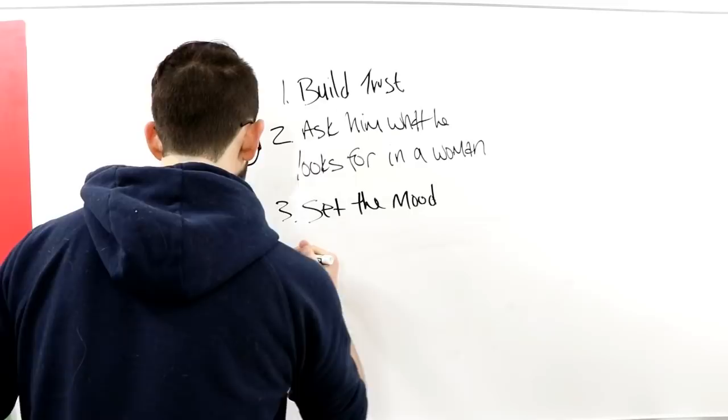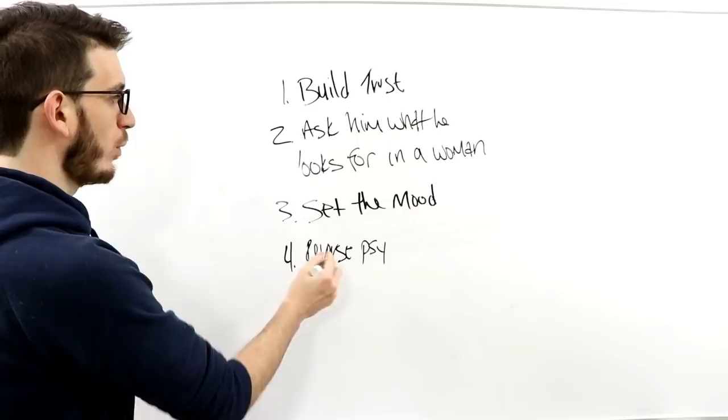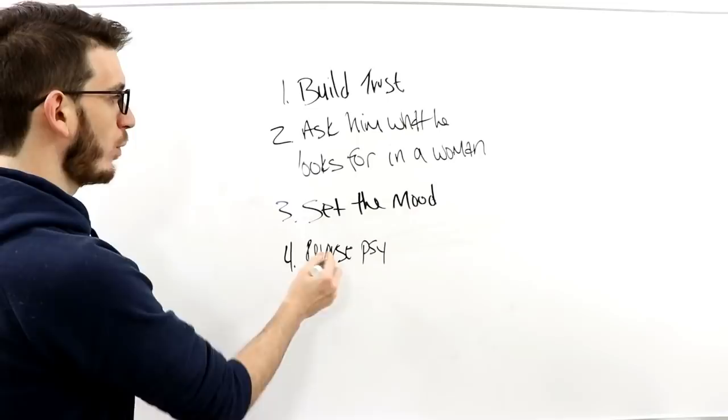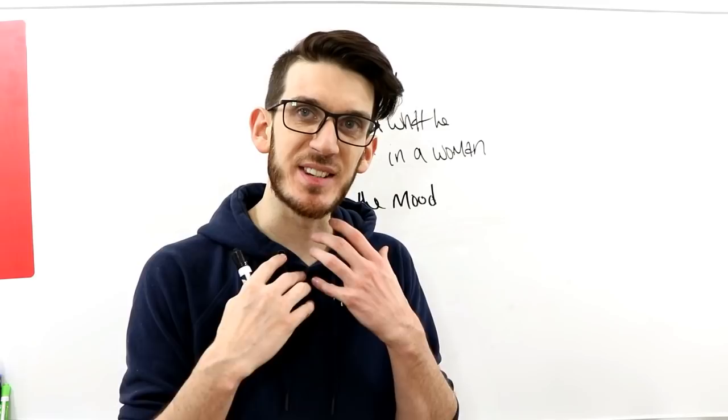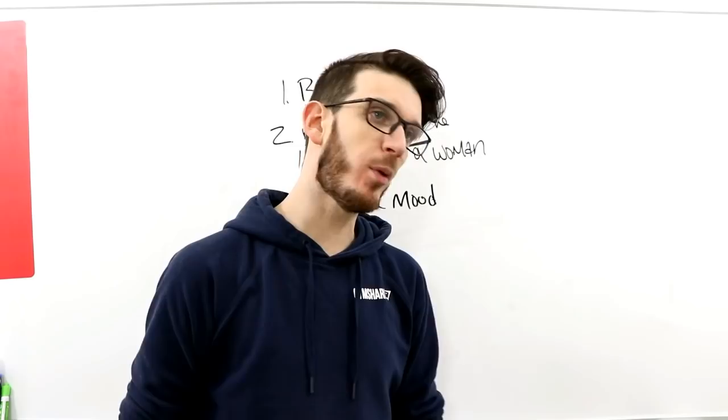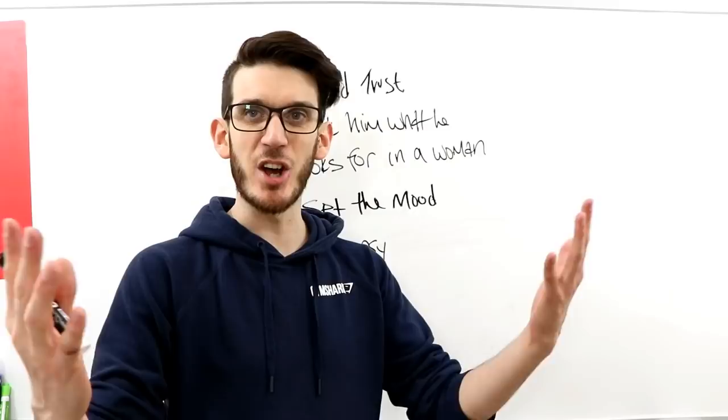Number four would be reverse psychology. And here's what I mean by this. A lot of women reveal their feelings way too fast. Maybe not by what they say, but how they act. So a lot of women might be too interested, too eager, too available, way too available all the time. Want to see him all the time, blow up his phone, whatever it is. And the guy knows where she stands.